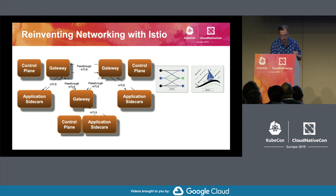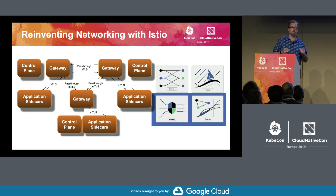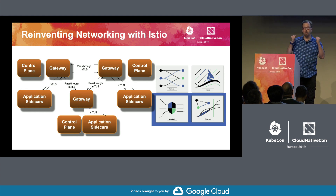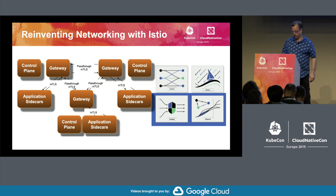Magically, we pick up the other two cool features of the Istio service mesh — control and observability. This is why we want service mesh, why we want multi-cloud — because we are reinventing networking.